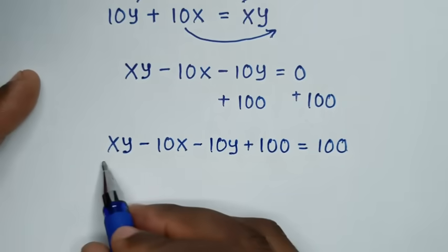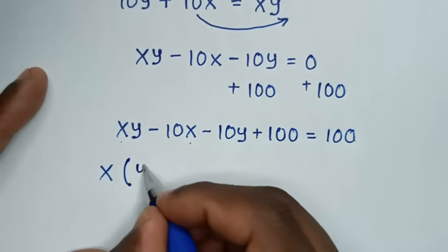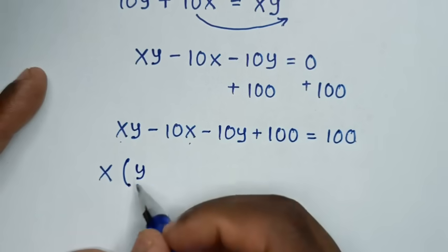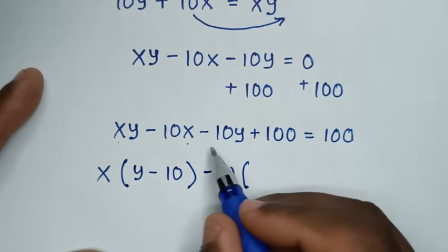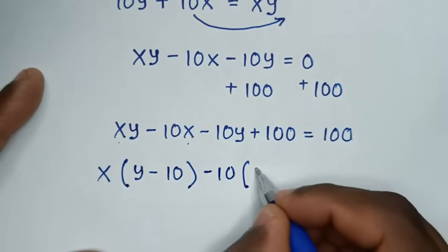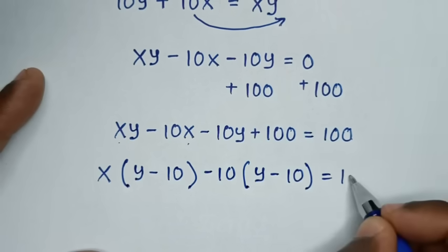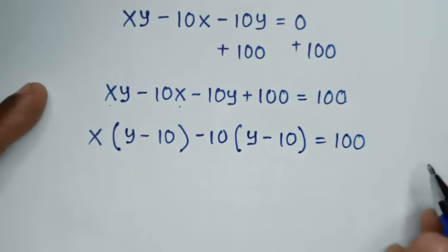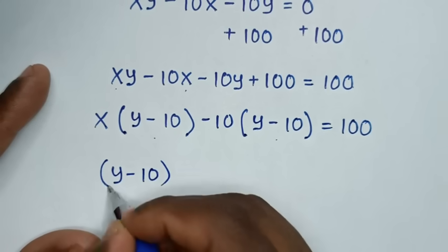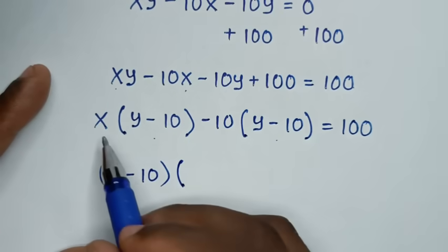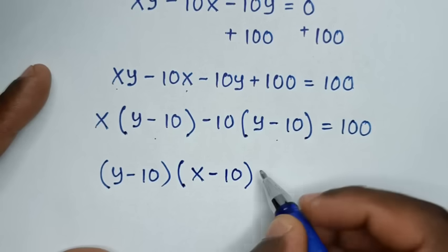From here, x is common in the first two terms. Taking x out of the bracket gives x times (y minus 10). Then taking minus 10 out of the remaining terms gives minus 10 times (y minus 10). So (y minus 10) is common, giving us (x minus 10)(y minus 10) equals 100.